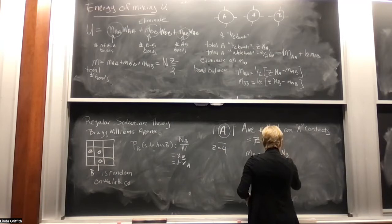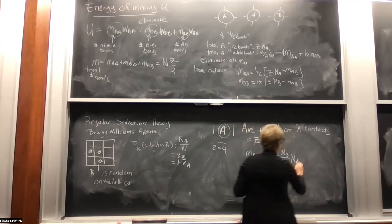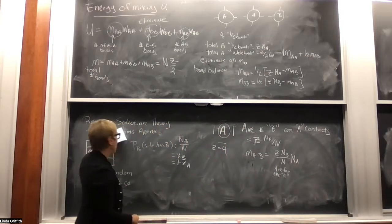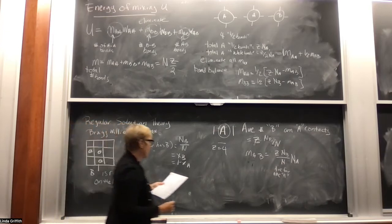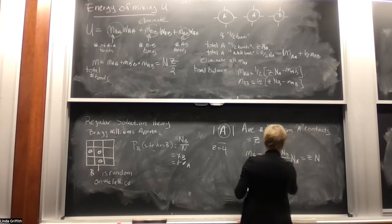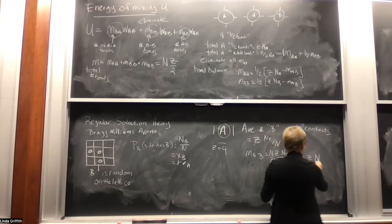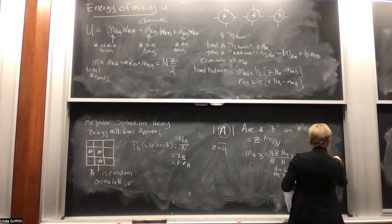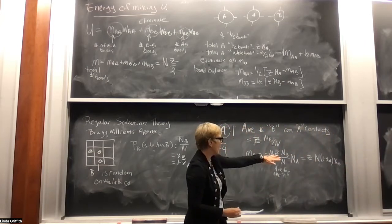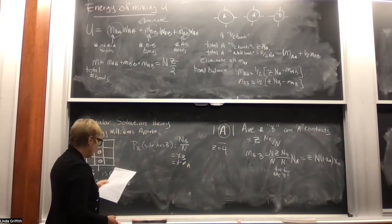So the total number of AB bonds M_ab equals z times (N_b / N) times N_a — the average contacts per A molecule multiplied by the total number of A molecules. We can rewrite this as z times N_a times N_b divided by N, or equivalently z times N times x_a times (1 minus x_a), converting to mole fractions.